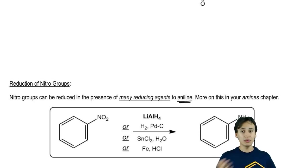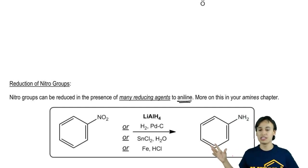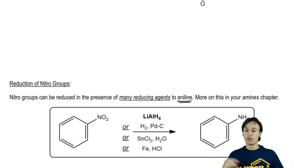Nitro groups can be easily reduced to aniline. A reduction reaction would remove oxygens and add hydrogens to make aniline. Even though we're going to discuss this more in your amines chapter, I want to go through it right now and show you some of the most important reducing agents that can make this conversion happen.